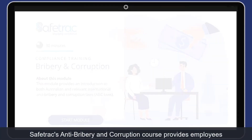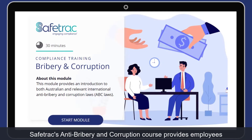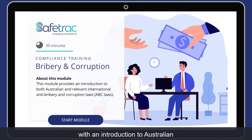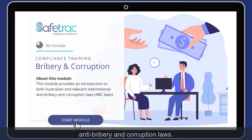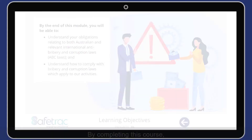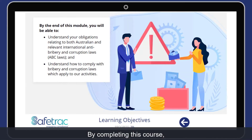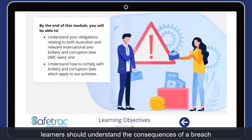Safetrack's Anti-Bribery and Corruption course provides employees with an introduction to Australian anti-bribery and corruption laws. By completing this course, learners should understand the consequences of a breach and identify how bribery and corruption can be prevented.